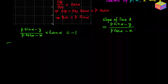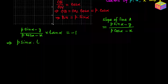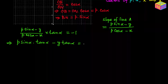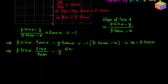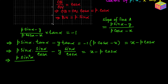Let's simplify. Expanding gives: p·sin(alpha)·tan(alpha) − y·tan(alpha) = x − p·cos(alpha). Writing tan(alpha) as sin(alpha)/cos(alpha), this becomes: p·sin²(alpha)/cos(alpha) − y·sin(alpha)/cos(alpha) = x − p·cos(alpha).